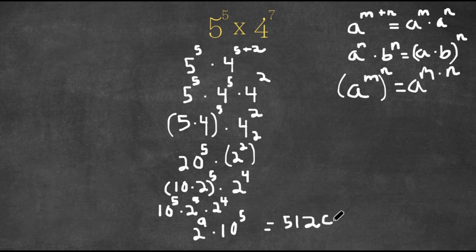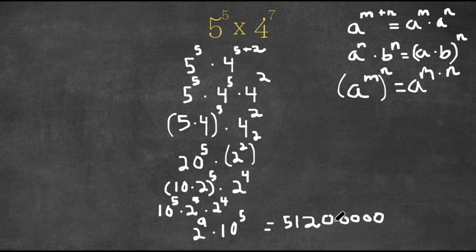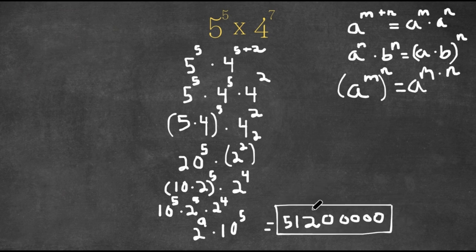So we count: one, two, three, four, five zeros. So 51,200,000 is our answer to this problem.